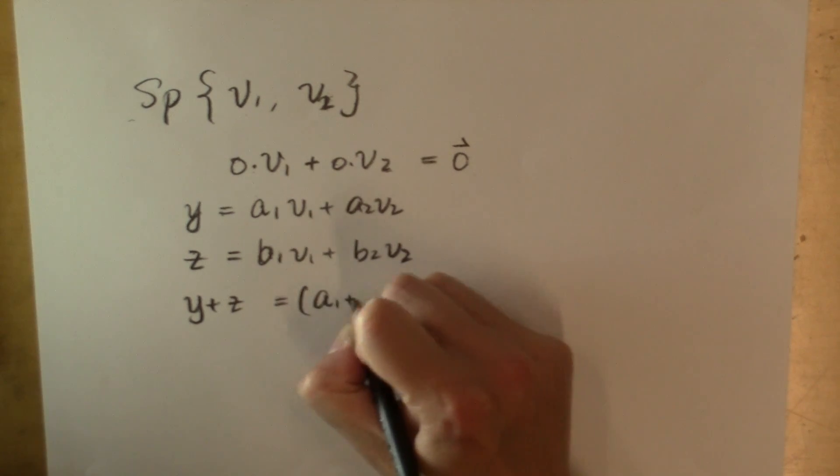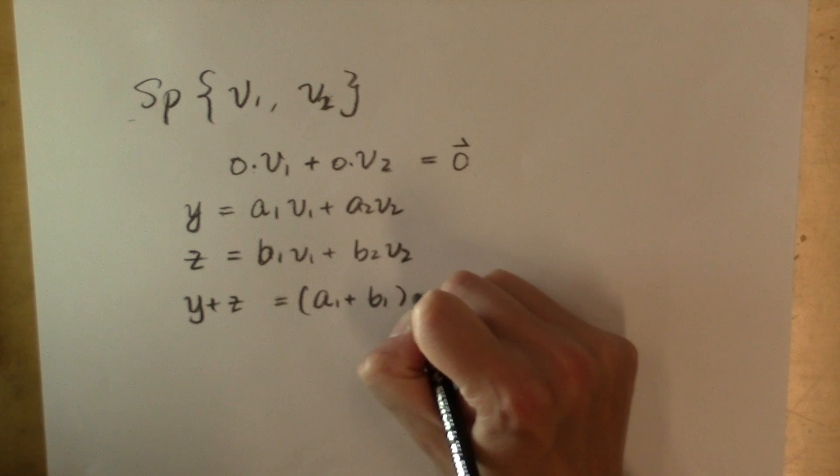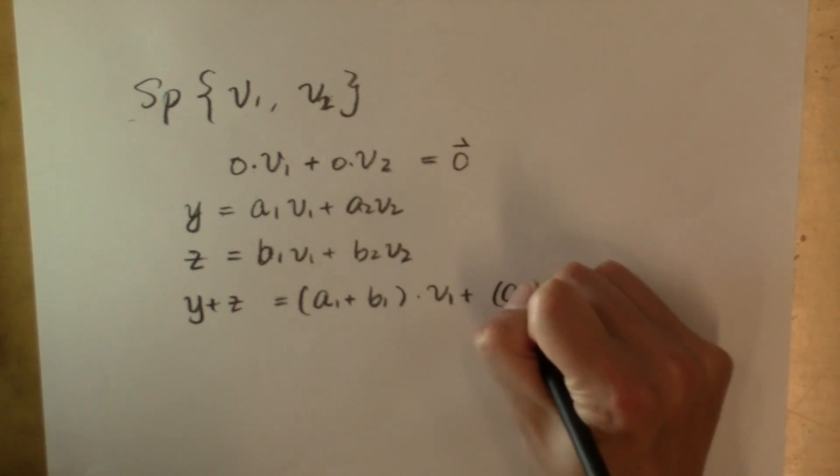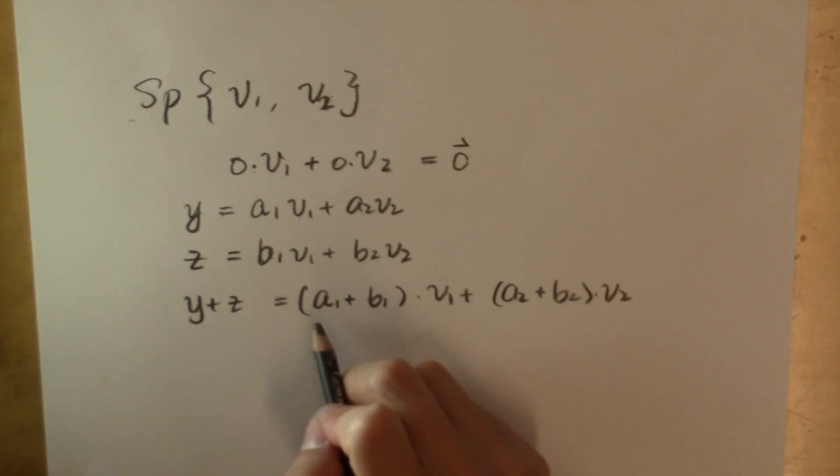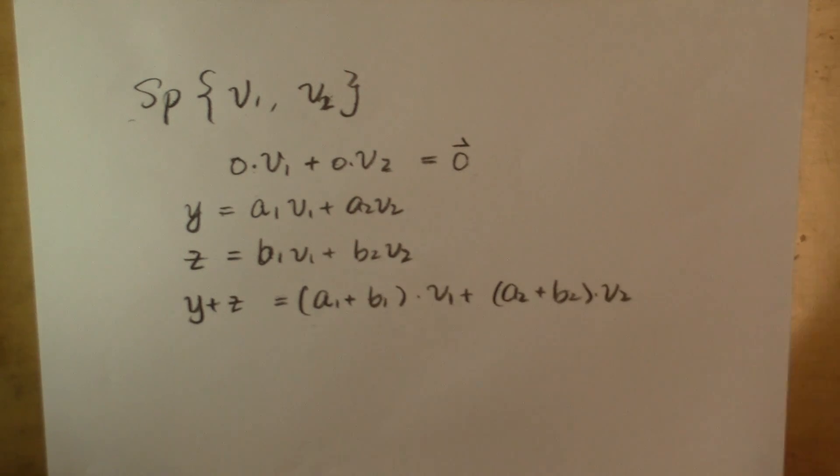Because the sum is a sub 1 plus b sub 1 times v sub 1 plus a sub 2 plus b sub 2 times v sub 2, which is also a linear combination of v sub 1 and v sub 2.